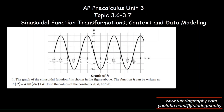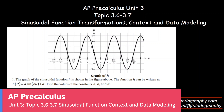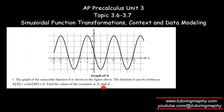Let's do a review on some questions based on sections 3.6 and 3.7 of Unit 3 AP Pre-Calculus. We're given the graph of a sinusoidal curve and need to find the values of A, B, and D.